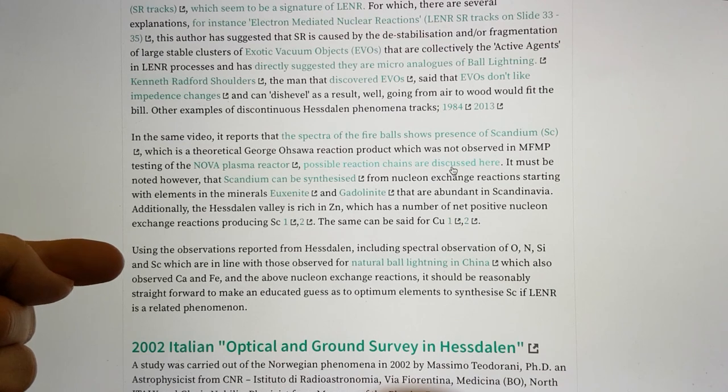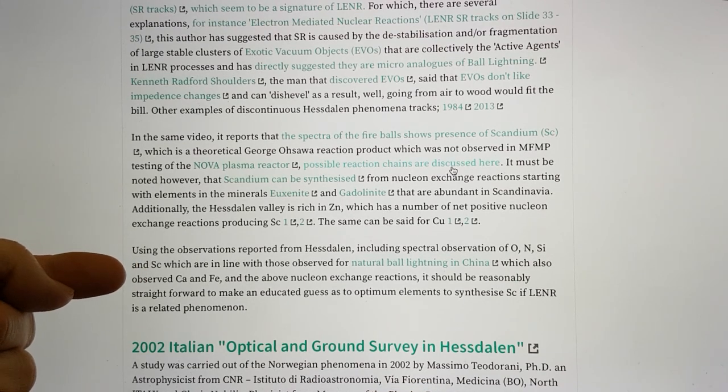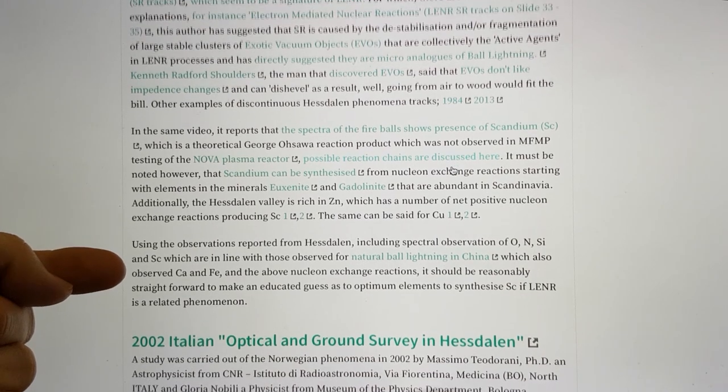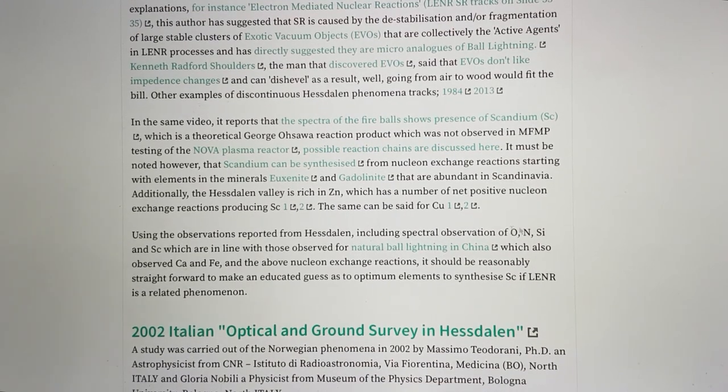There's a whole range of different ways you can synthesize scandium. I'm saying that there's nuclear and exchange reactions potentially inside an active agent, which could be the ball lightning, that scandium can be synthesized from because there's euxenite and gadolinite available in the area in Scandinavia. Also, the Hessdalen Valley is rich in zinc and copper, and I've given links to nucleon exchange reactions that are able to produce those.